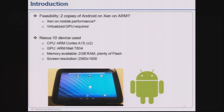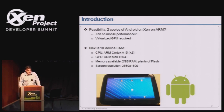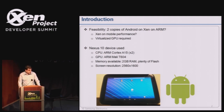The feasibility of this project was to try and run two Androids on a Nexus 10, on Xen on ARM, with a real good user experience. Xen is for servers and we wanted to see if it can run on mobile. Android uses the GPU heavily for all of its graphics, scrolling and menus, so the big challenge is to virtualize the GPU between both domains.